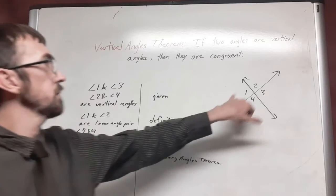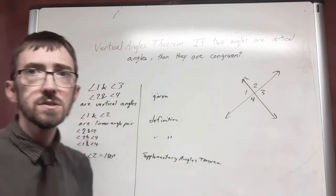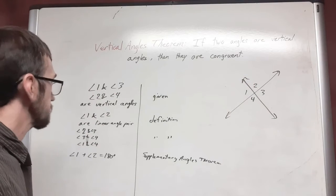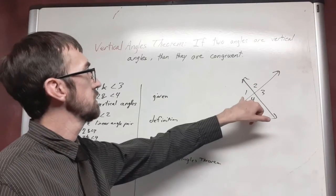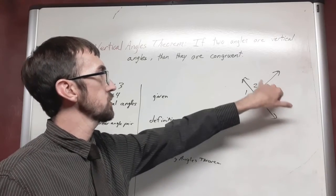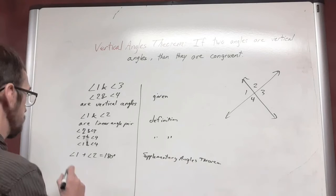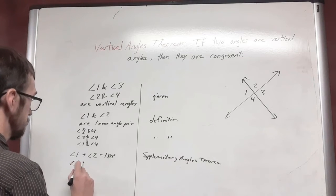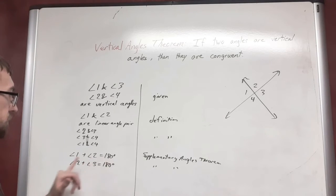So angle one plus angle two is 180 degrees. And angle two plus angle three is also 180 degrees for the same reason. Now I have a statement of angle one plus angle two is 180 degrees. Angle two plus angle three is 180 degrees.